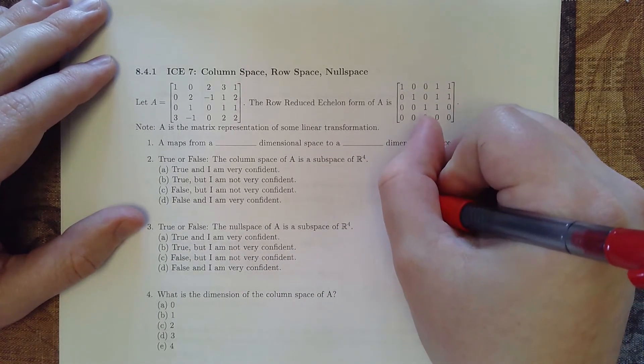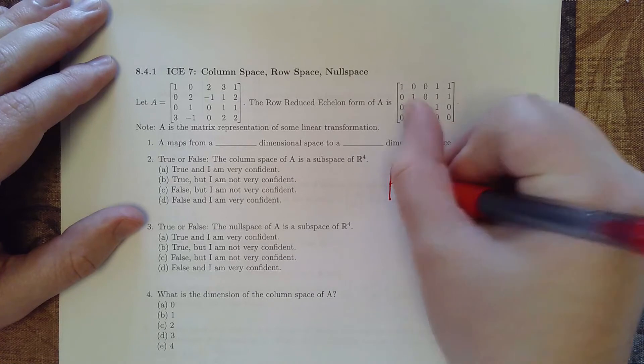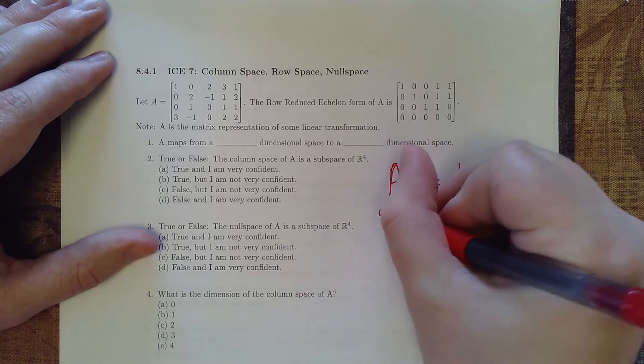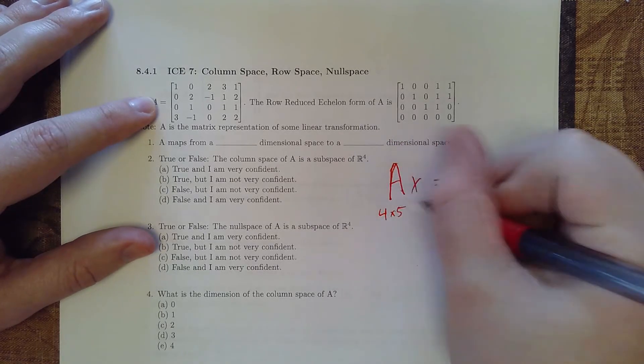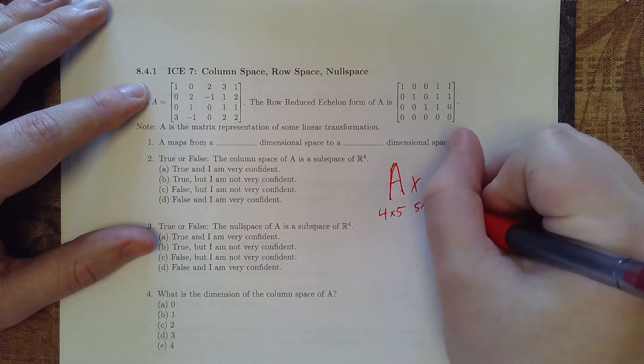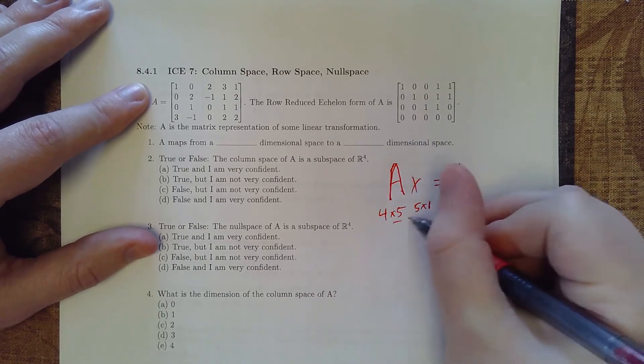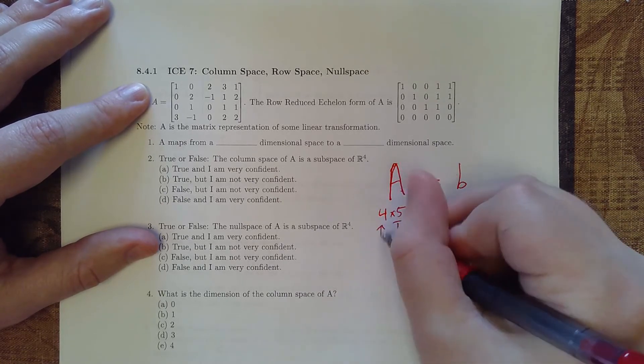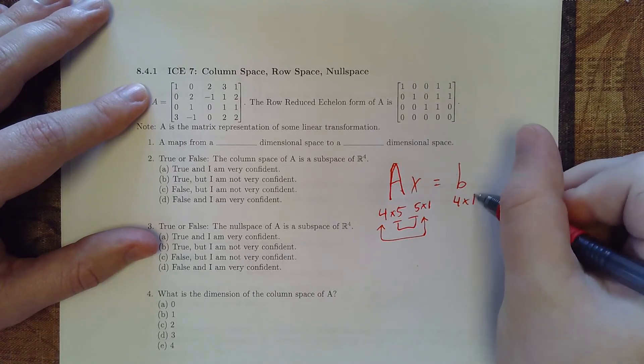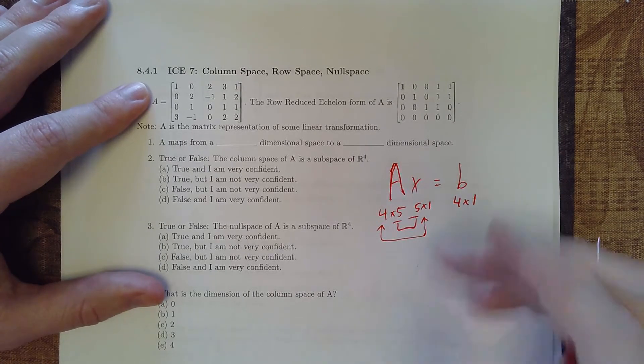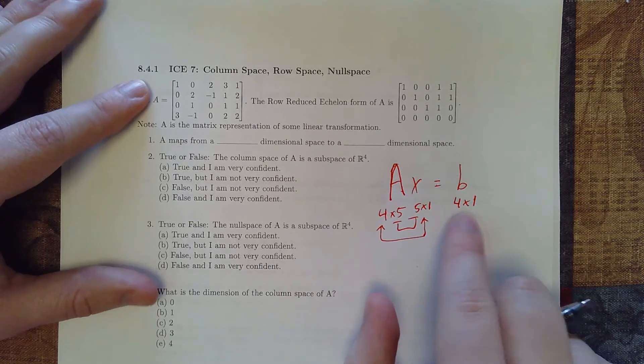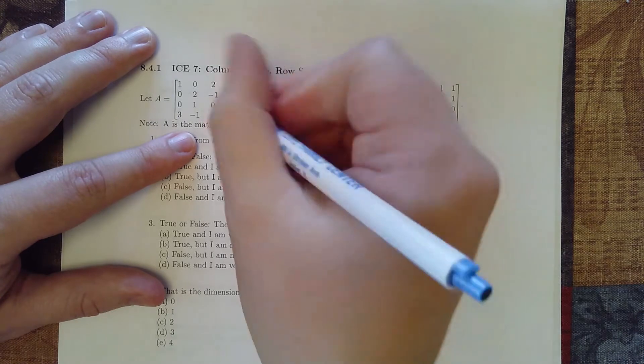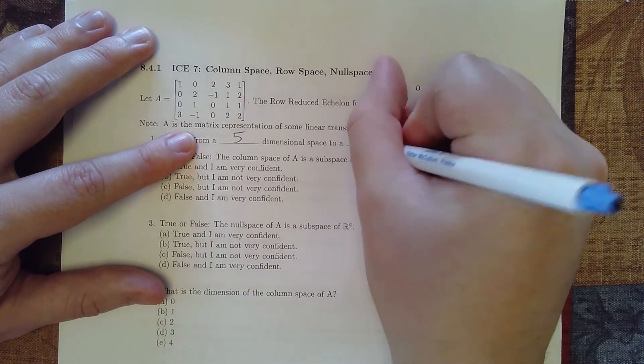So the idea here is we've got A times some x equals some output B. And so we know that A is a 4 by 5 matrix. And so the inputs are going to have to be 5 by 1 because we need to match the outputs here. And the outside dimensions here are going to define what this output is. The input is a 5 by 1, the output is a 4 by 1.